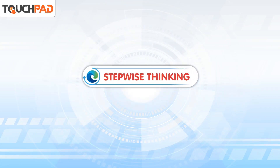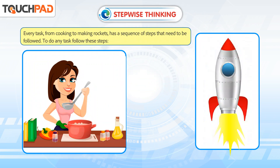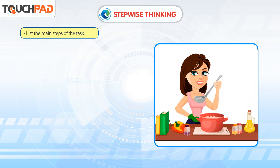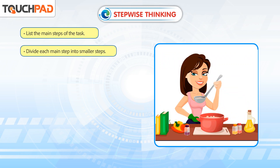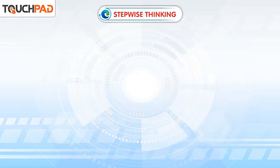Stepwise Thinking. Every task, from cooking to making rockets, has a sequence of steps that need to be followed. To do any task, follow these steps: list the main steps of the task, divide each main step into smaller steps, and follow the sequence of steps.